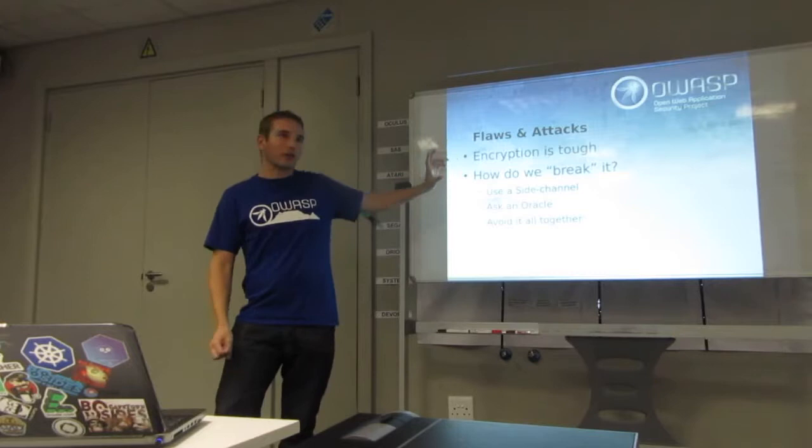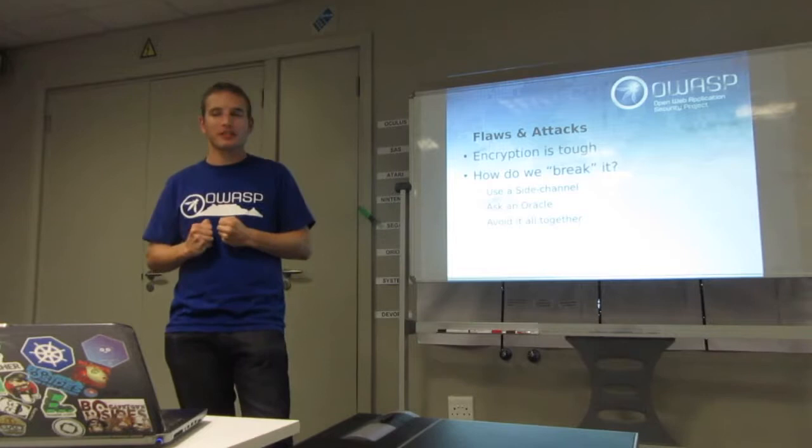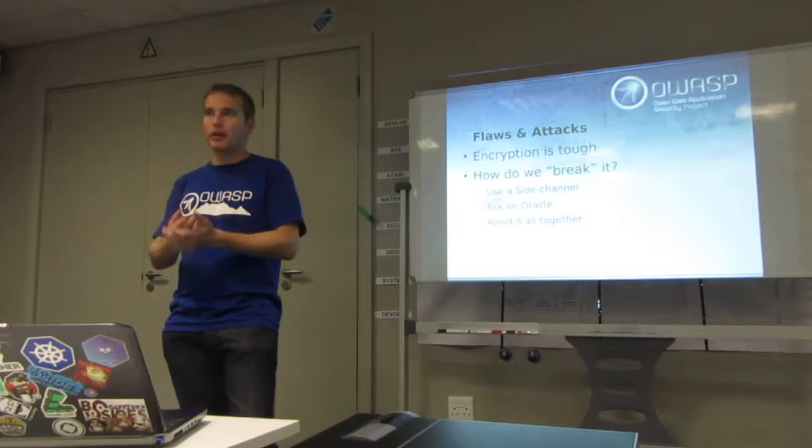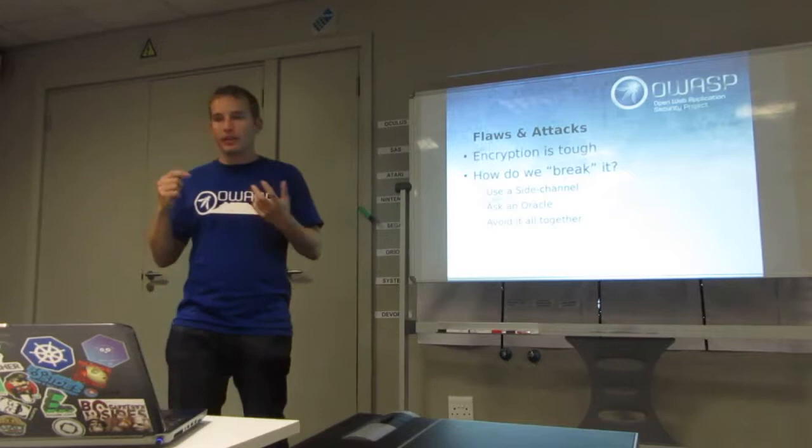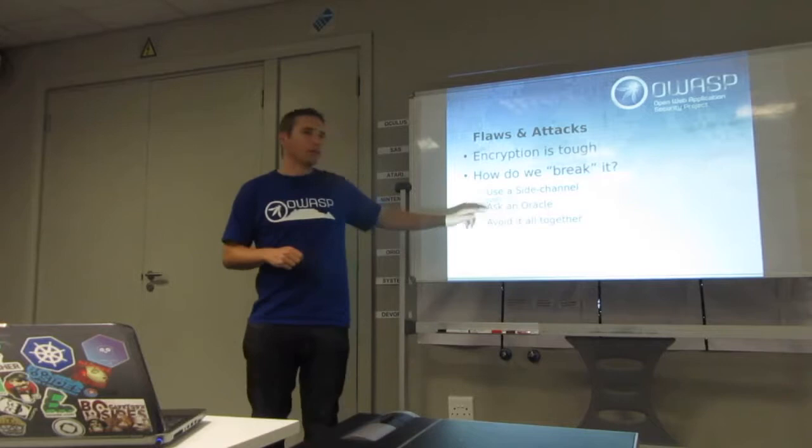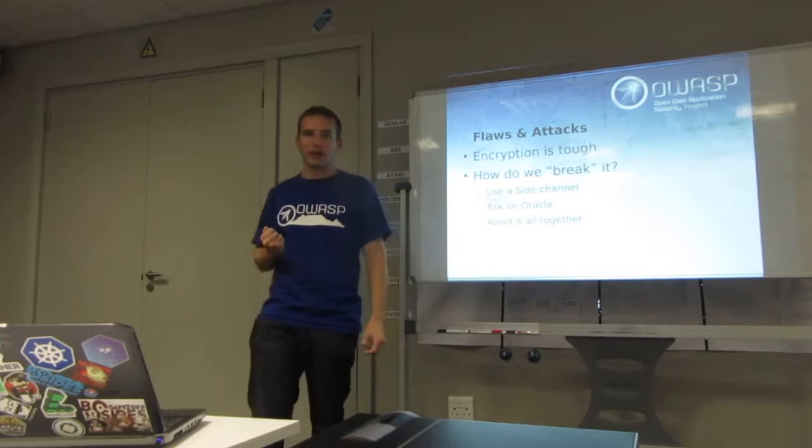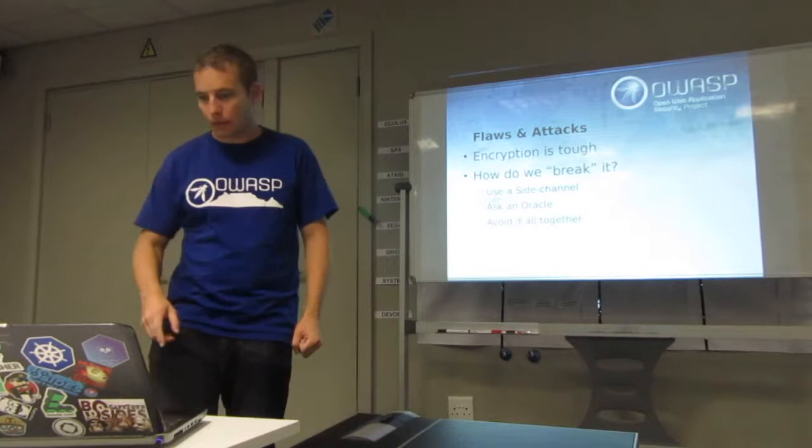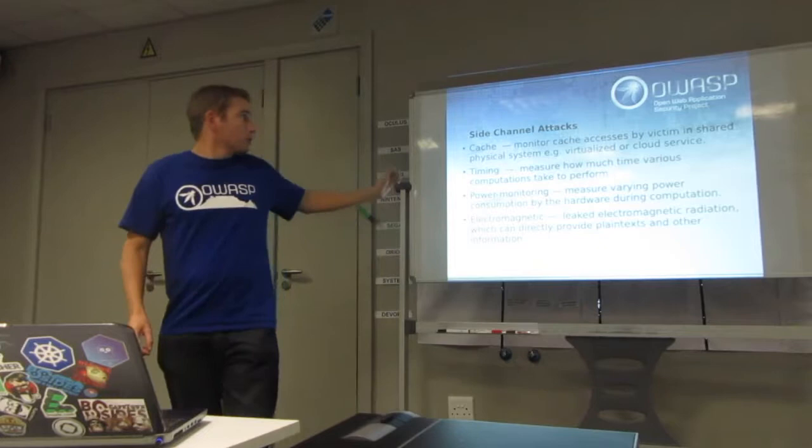So the more interesting part of the talk now that you've got the primer out the way - it is flaws and attacks. As with all things, nothing's perfect. And encryption is actually tough when it's done right. People have really put a lot of effort to it. The guys are smart, they've had a whole lot of people looking at it and pulling it apart and proving that it's mathematically sound. So how do we break it? And I say break in inverted commas here because that's not really breaking it, is it? Using a side channel isn't really breaking it either. And asking an oracle, well that's typically not breaking it either. So like three methods of not breaking encryption to actually get around encryption, or three categories. We will look at those.